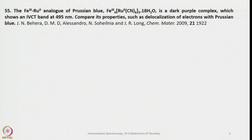Here is a question: the iron-3 ruthenium-2 analog of Prussian blue. You are all familiar with Prussian blue — it has iron-3 and iron-2. Here we are talking about a hybrid of iron-3 and ruthenium-2: Fe3[Ru(CN)6]3 · 18H2O. This is a dark purple complex, unlike the homoleptic iron-iron analog that is intense blue in color. It shows an IVCT — intervalence charge transfer or metal-to-metal charge transfer — band at 495 nanometers. Compare its properties, such as delocalization of electrons, with Prussian blue.